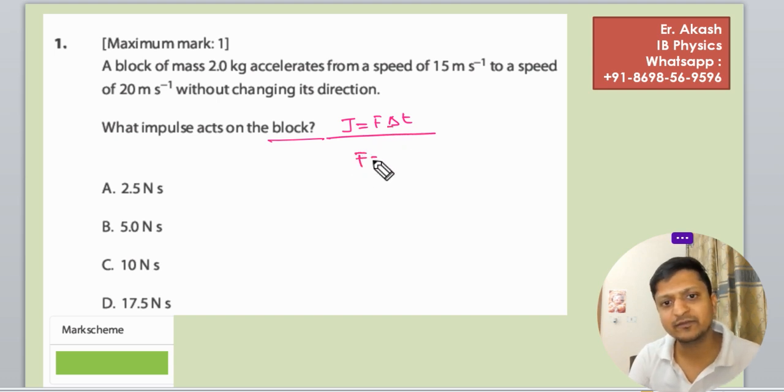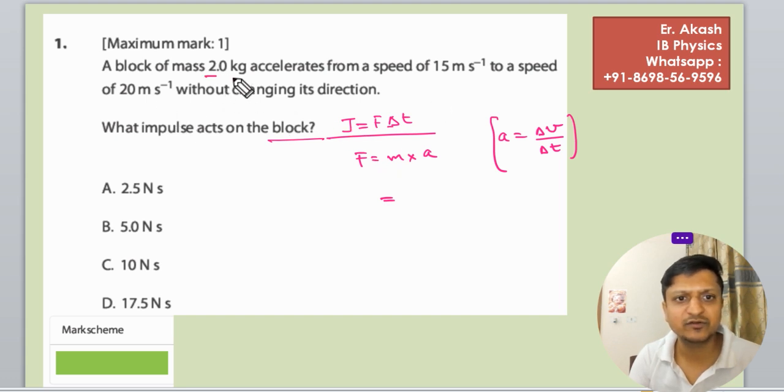That is F equals ma, and acceleration is change in velocity divided by change in time. So force is mass, mass of the body is 2 kg, and acceleration is delta v by delta t.